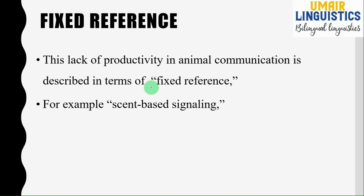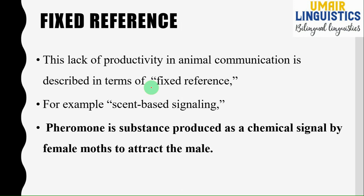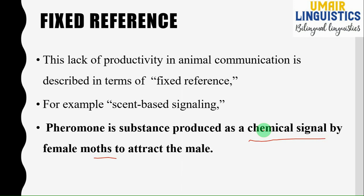For example, scent-based signaling. Many species, including moths, produce a chemical signal called a pheromone. They produce this chemical signal only when they want to attract a mate, and vice versa. Many species produce this pheromone only to attract the opposite sex — it will be produced only during mating season or only while attracting.